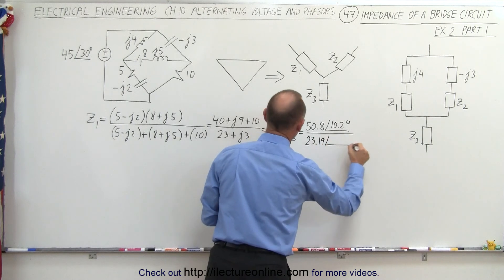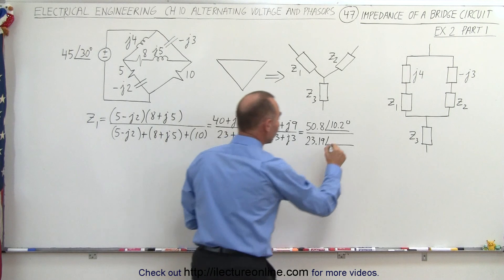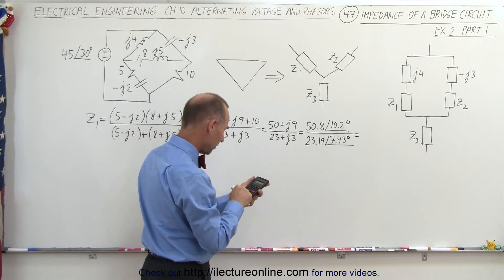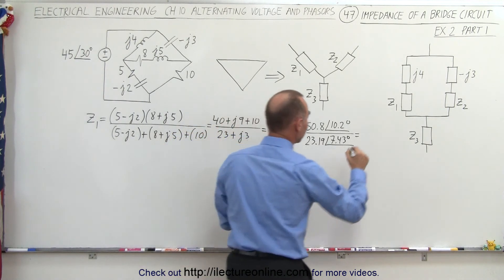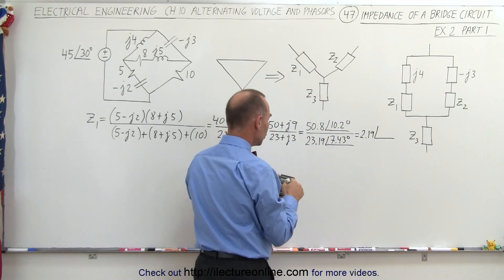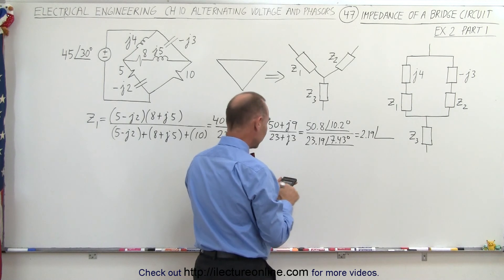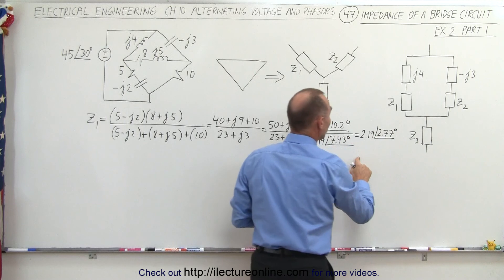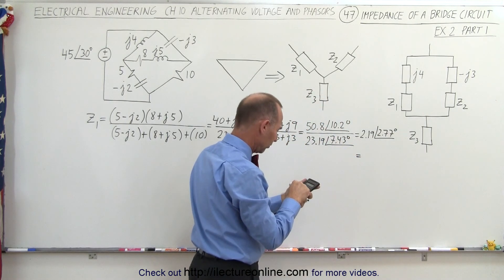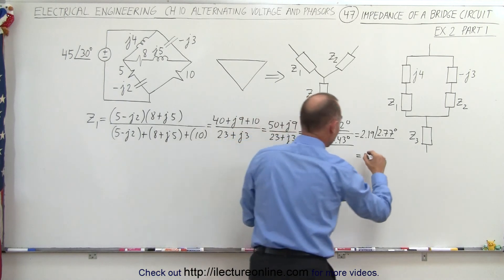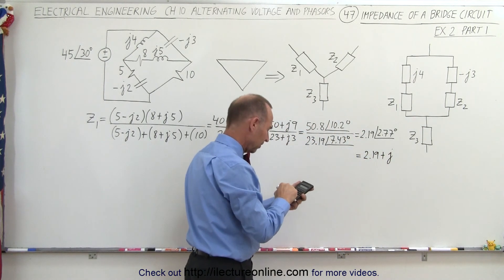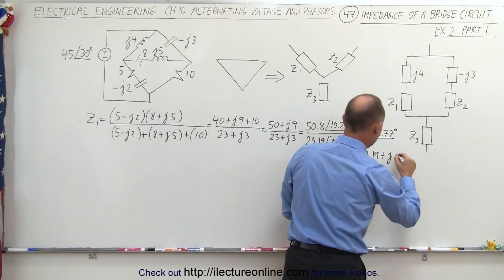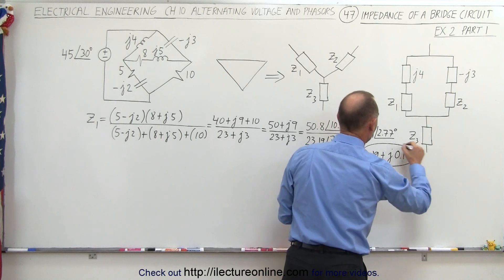23.19 with a phase angle — the inverse tangent of (3 divided by 23) gives us 7.43 degrees. Dividing, we get 50.8 divided by 23.19, which gives us 2.19 with a phase angle of 10.2 minus 7.43, giving us 2.77 degrees. Since we're going to add that to the impedance above, we reconvert into real and imaginary parts. Taking the cosine of 2.77 degrees times 2.19 gives us 2.19, plus j times the sine of 2.77 degrees times 2.19, which equals 0.11. So this is the impedance Z1.